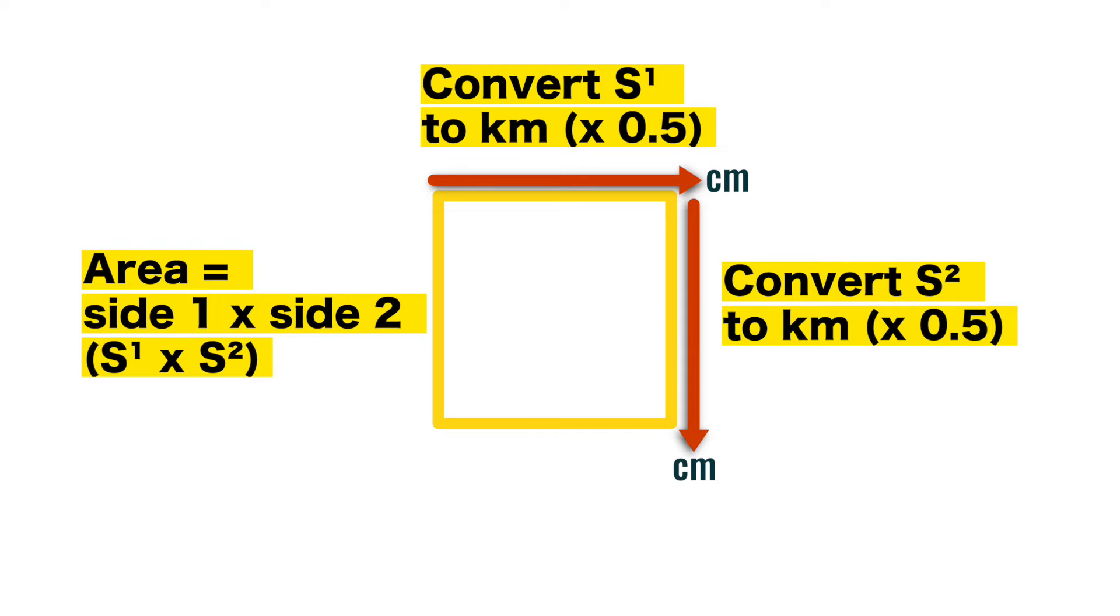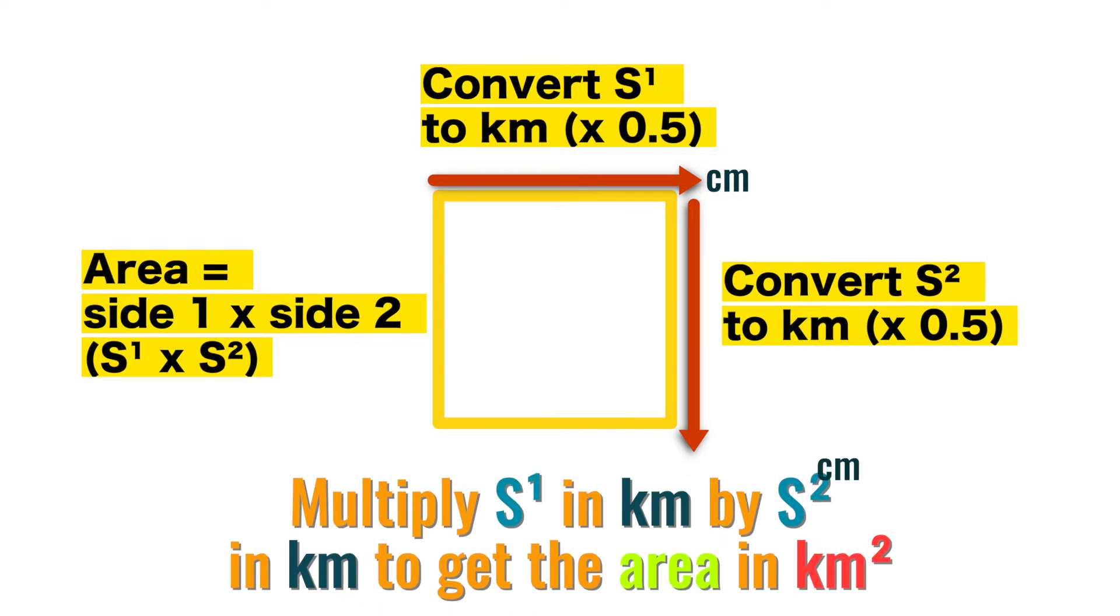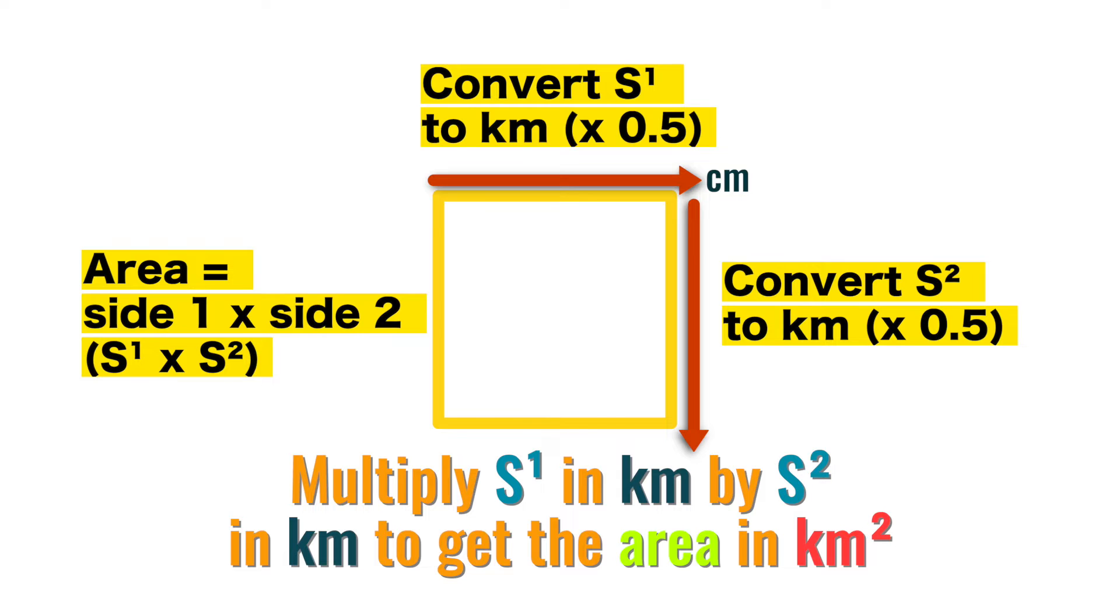Then at the end, you take your side 1 in kilometres, and side 2 in kilometres, and multiply them together to give you kilometres squared.